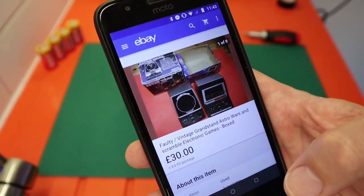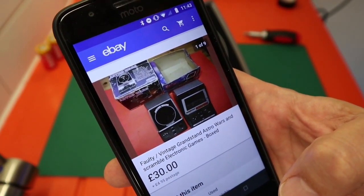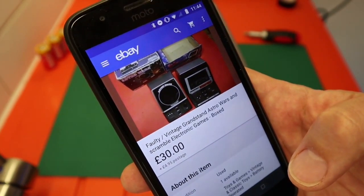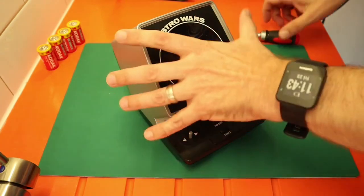I actually bought two items. There's the listing. I got a Grandstand Astrowars and a Grandstand Scramble. I paid £30 plus £4.95 postage, and they're faulty and not working.